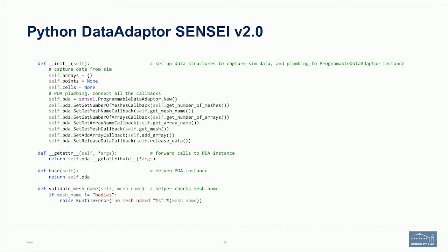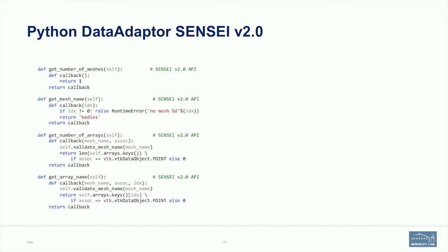I wanted this class to actually inherit from programmable data adapter, but for various technical reasons it doesn't work well in Python. So instead I'm using self.pda as an instance of programmable data adapter, and using a Python trick: if you have a `__getattr__` function — a special function denoted by double underscores — when Python goes to look up a function in your class, it executes `__getattr__`. This lets me forward calls right to the Sensei programmable data adapter, so my class looks as if it is a programmable data adapter with some extra methods. validate_mesh is a helper that checks the mesh name for error checking.